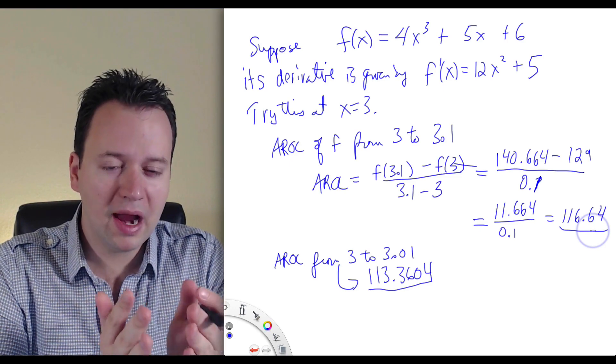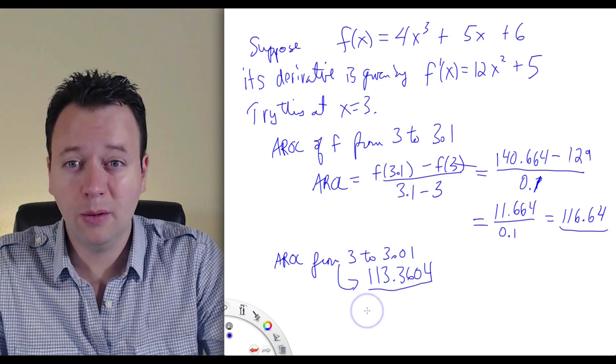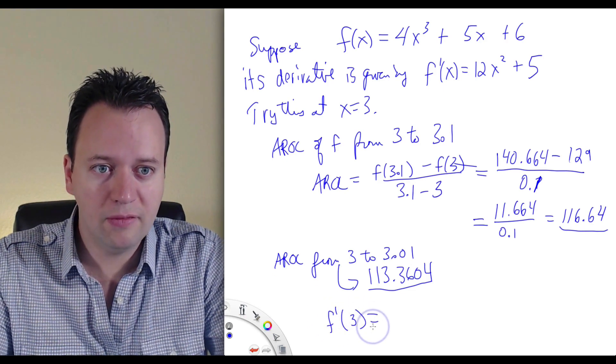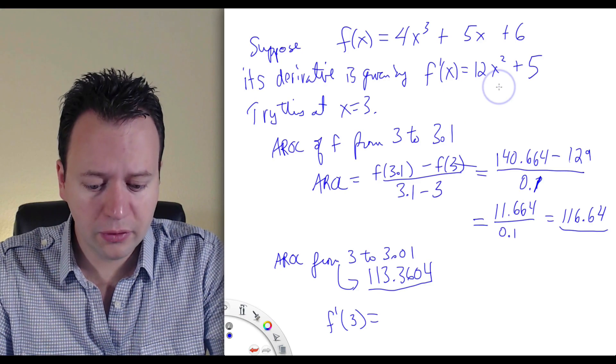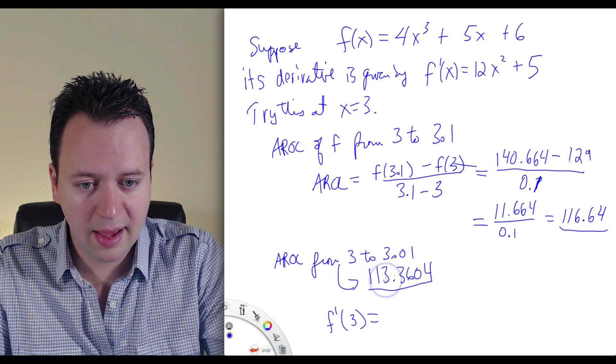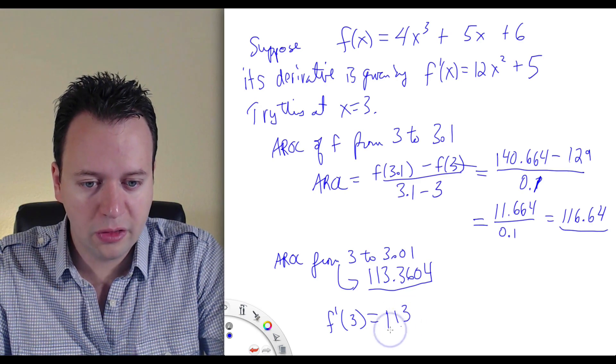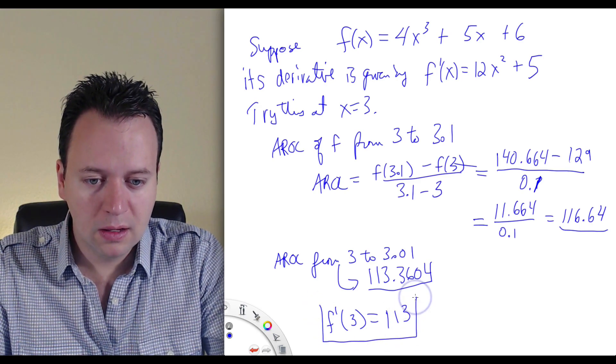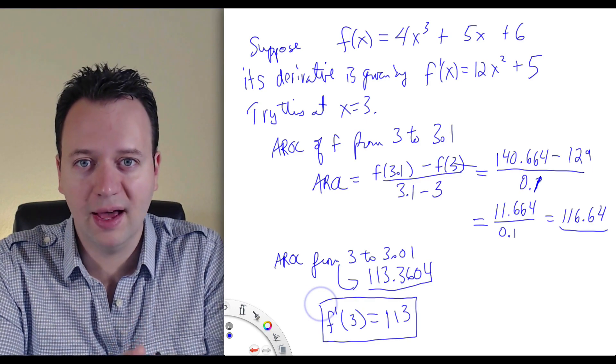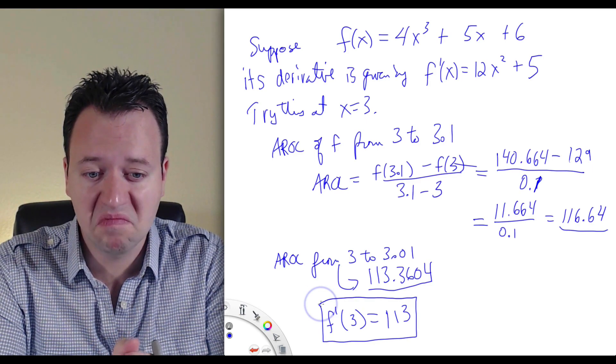Now let's compare this with f prime of 3. So let's see what the exact value of the instantaneous rate of change is. f prime of 3, well, 3 squared, we get 9 times 12 is 108 plus 5, we get just 113 even. So that's the exact value of the instantaneous rate of change of f(x) at the point x equals 3.